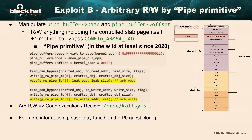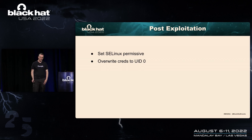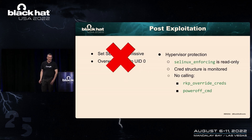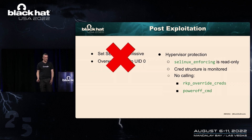Welcome Richard for talking about post-exploitation techniques. At this point the attackers have got kernel read/write. You might think the next step is the normal: set SELinux to permissive and overwrite the process credentials to become UID zero. However, in this case, the target devices have a hypervisor providing an additional layer of protection. The memory containing SELinux enforcing is read-only, the process credential structures are monitored so you can't edit them, and unprivileged user mode processes aren't allowed to call useful functions such as RKP_override_creds or power off commands. So the attackers need to find other ways to change SELinux and set their user ID.